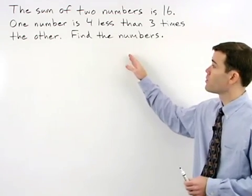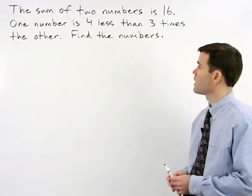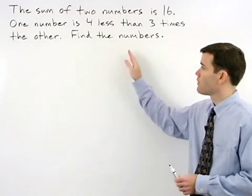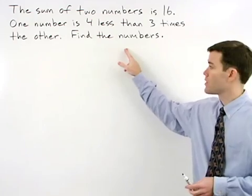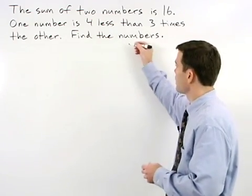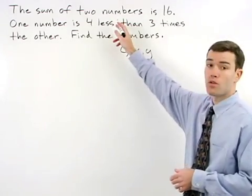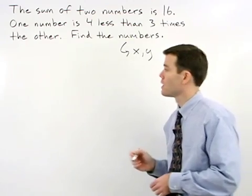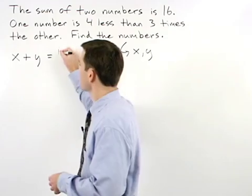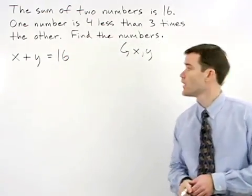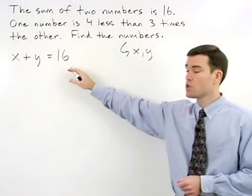The sum of two numbers is 16. One number is 4 less than 3 times the other. Find the numbers. Let's use two variables to represent our numbers in this problem, x and y. So if the sum of two numbers is 16, that means x plus y equals 16. Remember, to solve for two separate variables, we need two separate equations.